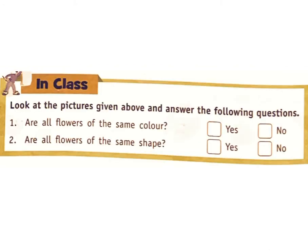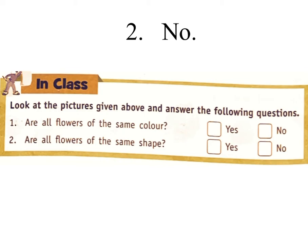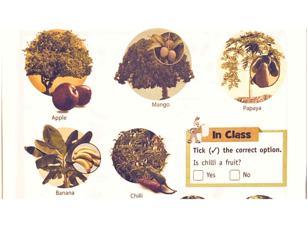Some flowers, such as the sunflower, are big. Some flowers, such as jasmine and rose, have a nice smell. In class, look at the pictures and answer: Are all flowers of the same color? Answer: No. Are all flowers of the same shape? Answer: No.